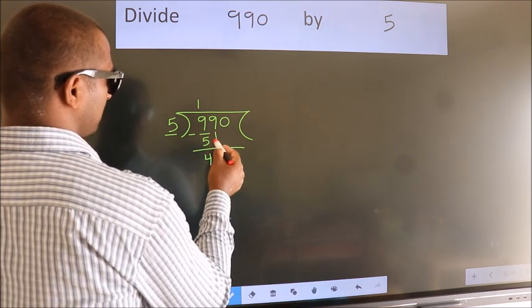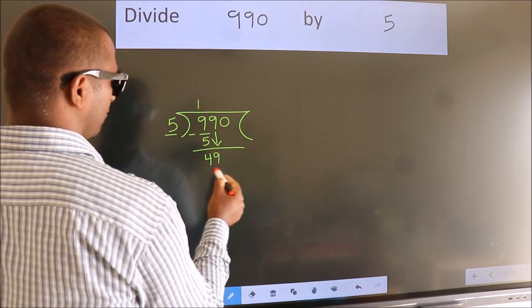After this, bring down the beside number. So 9 down. So 49.